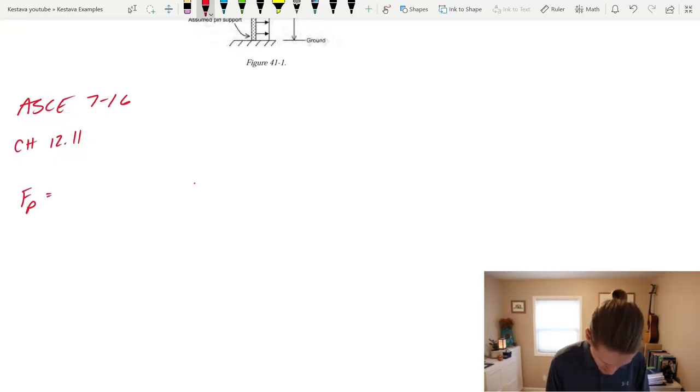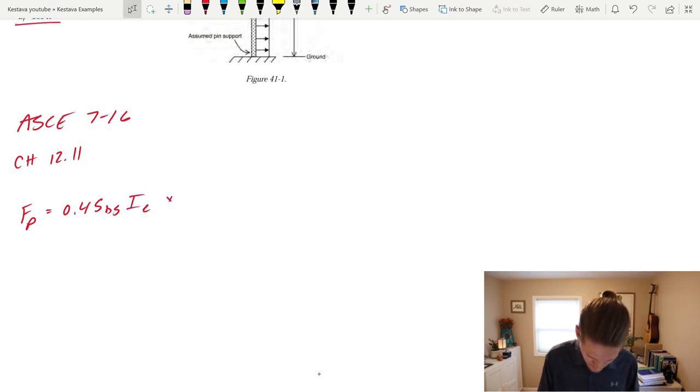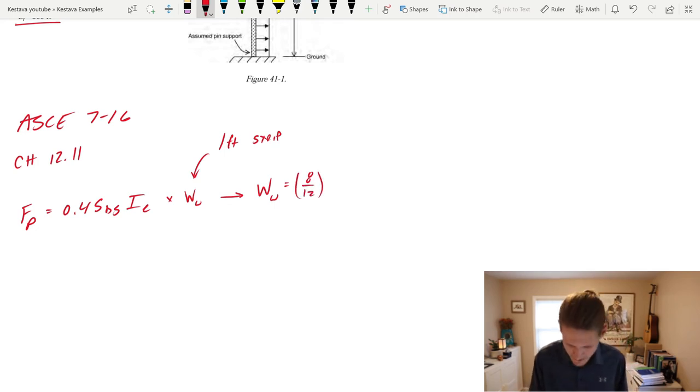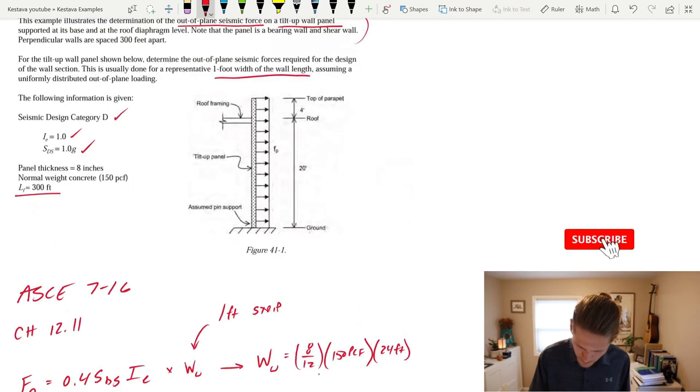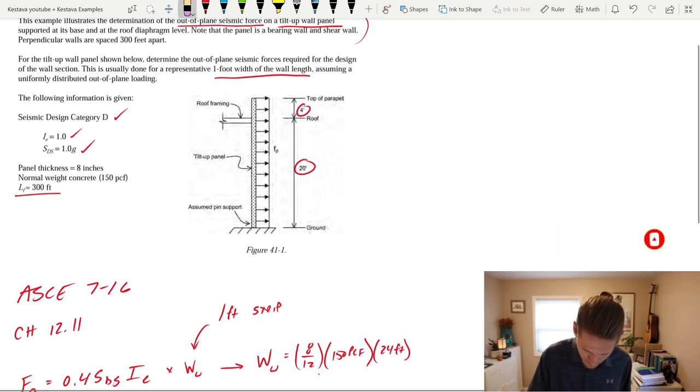Alright, so F sub P equals 0.4 S_DS importance factor, times W sub W, the weight of your wall. Okay, and again, that's a per foot strip. Okay? Weight of your wall per foot is equal to, it's an 8 inch thick wall, so 8 over 12 to get it into feet, times 150 pounds per cubic foot, times a 24 foot high wall. And you're like, why 24? Because it's just 20 feet and then the 4 foot parapet. Alright? That is going to get us 2.4 KLF.